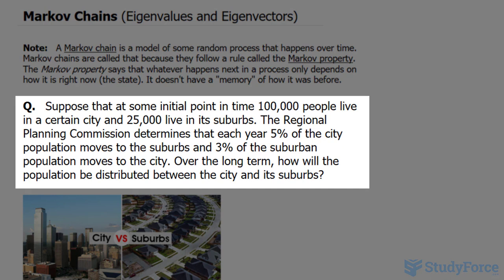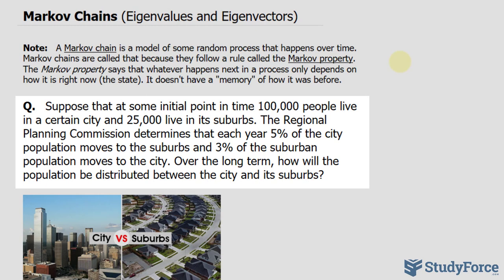Let's go on to answer the question. Suppose that at some initial point in time, 100,000 people live in a certain city and 25,000 live in its suburb. The Regional Planning Commission determines that each year, 5% of the city population moves to the suburbs and 3% of the suburban population moves to the city. Over the long term, how will the population be distributed between the city and its suburbs?